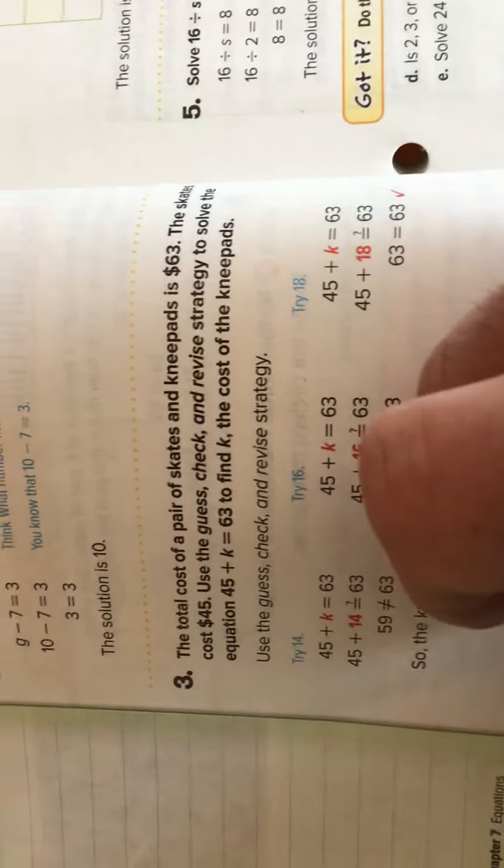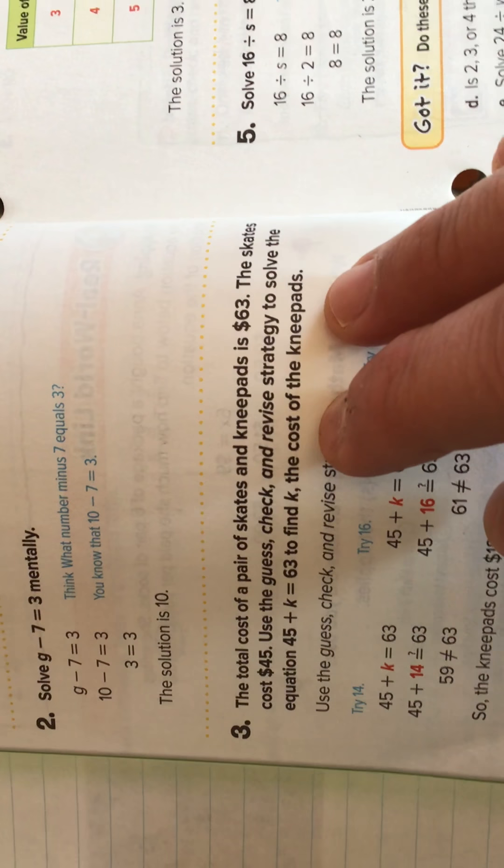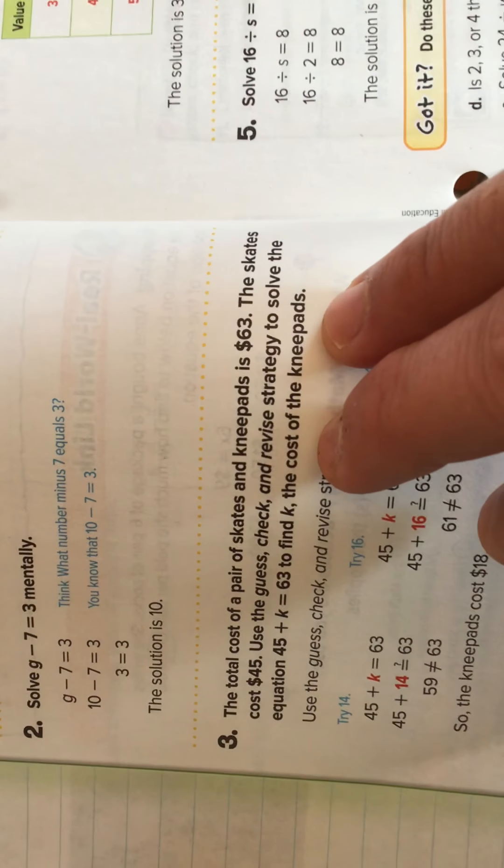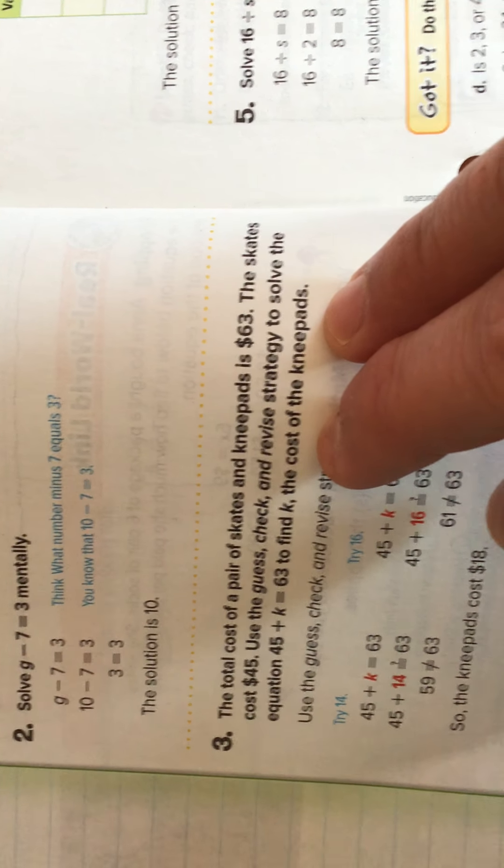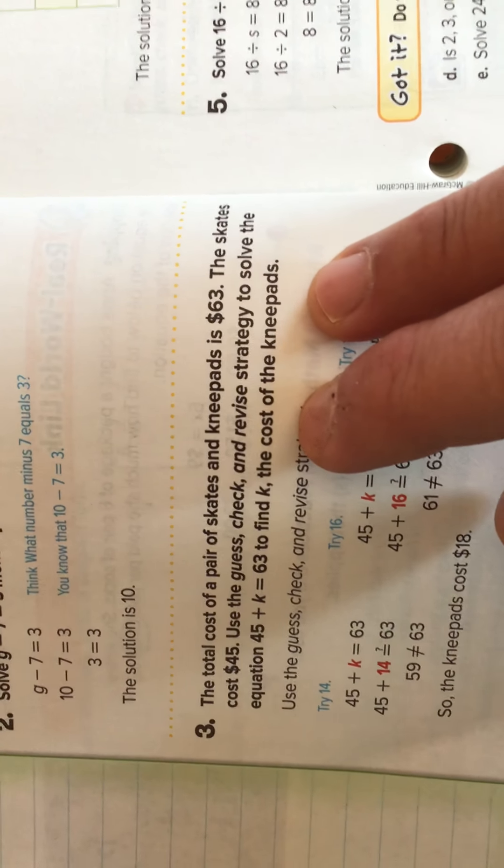Example 3. The total cost of a pair of skates and knee pads is $63. The skates cost $45. Use guess-check-revise strategy to solve the equation 45 plus k equals 63 to find k, the cost of the knee pads.